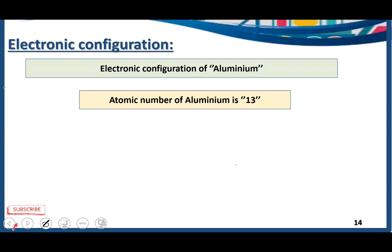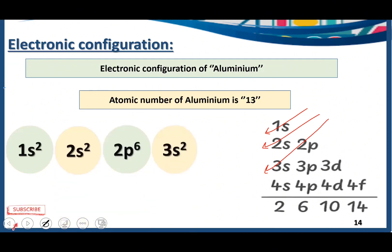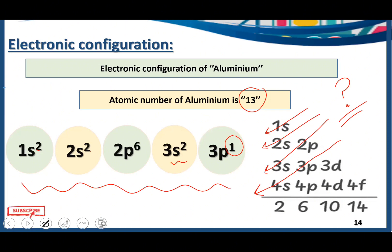Atomic number of aluminium is 13. We write 1s2, 2s2, 2p6, 3s2 — that accounts for 12 electrons: 2+2=4, 4+6=10, 10+2=12. We need to accommodate one more electron, but we cannot put more than 2 in the s subshell, so we need another energy level. We go to 3p and accommodate one more electron: 3p1. The electronic configuration of aluminium is 1s2, 2s2, 2p6, 3s2, 3p1.